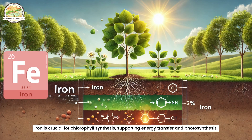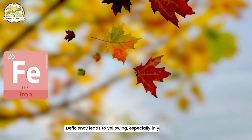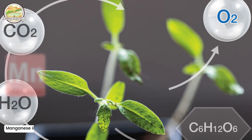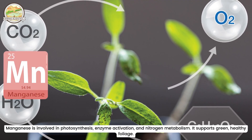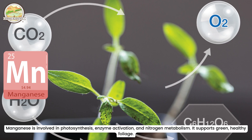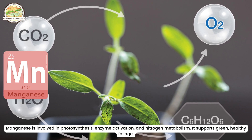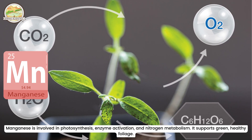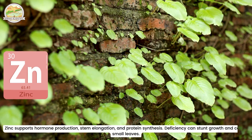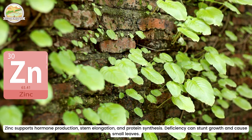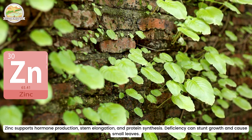Iron (Fe) is crucial for chlorophyll synthesis, supporting energy transfer and photosynthesis. Deficiency leads to yellowing, especially in young leaves. Manganese (Mn) is involved in photosynthesis, enzyme activation, and nitrogen metabolism, supporting green, healthy foliage. Zinc (Zn) supports hormone production, stem elongation, and protein synthesis. Deficiency can stunt growth and cause small leaves.